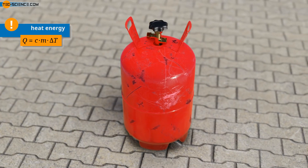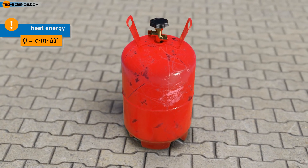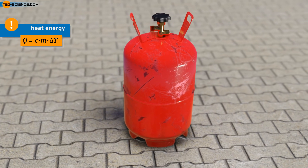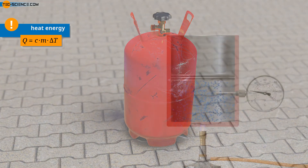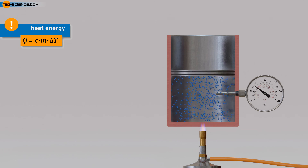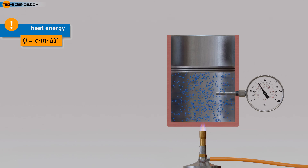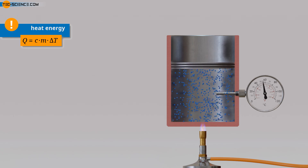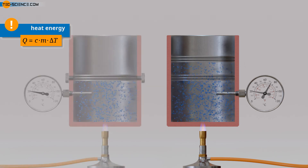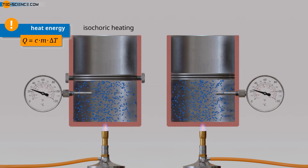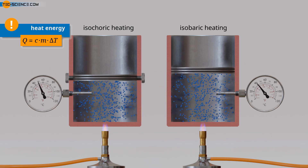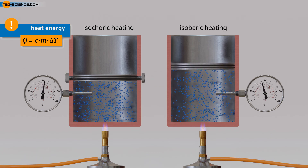The heating of a closed gas cylinder placed in the sun, for example, represents isochoric heating in which the gas volume remains constant. If, on the other hand, a gas is heated in an open vessel, or the vessel is closed with a frictionless sliding piston, then the gas can expand when heated — in this case, heating takes place at constant pressure. The animation shows an isochoric heating with a tightly screwed piston and, in comparison, an isobaric heat supply in which the piston can move without friction.